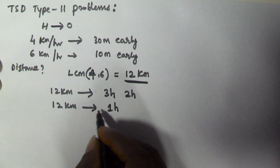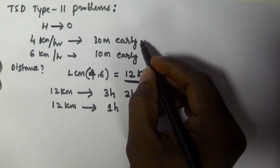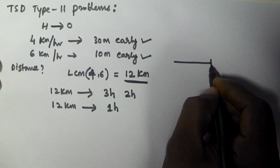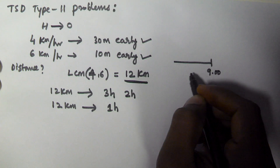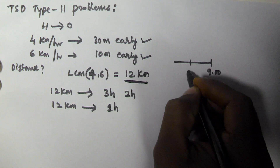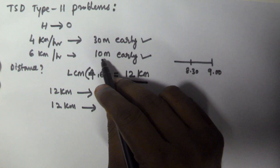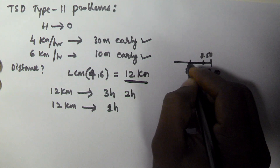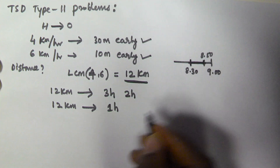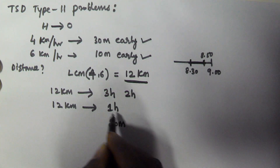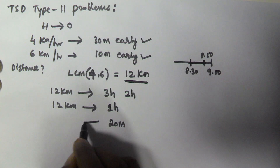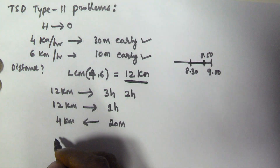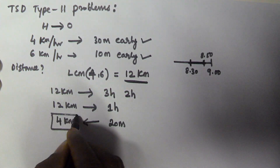So if 1 hour is equivalent to 12 km — he reaches 30 minutes early on the first day and 10 minutes early on the second day. Let us assume he generally reaches office at 9 AM. On the first day he reached at 8:30, and on the second day at 8:50. The time difference between 8:30 and 8:50 is 20 minutes. Since 1 hour corresponds to 12 km, 20 minutes (which is one-third of an hour) gives us 4 km. So the actual distance between his home and office is 4 km.